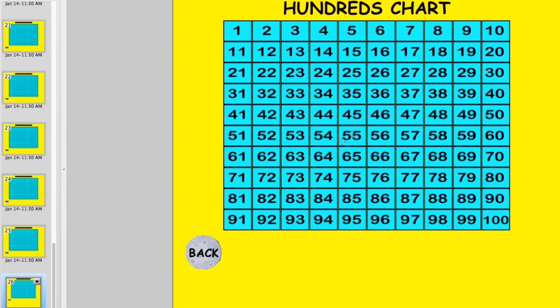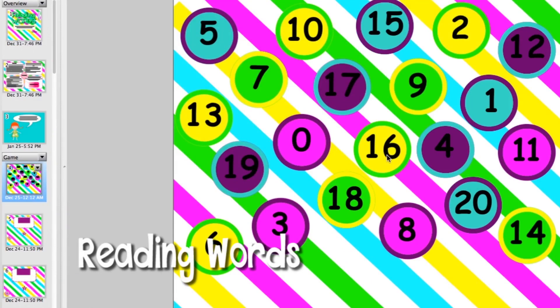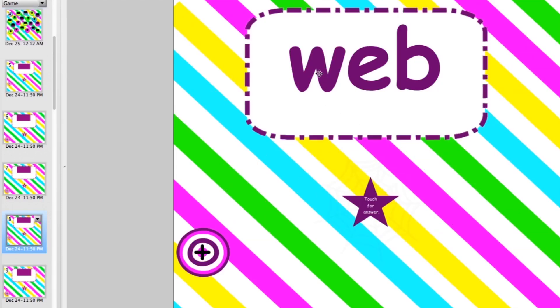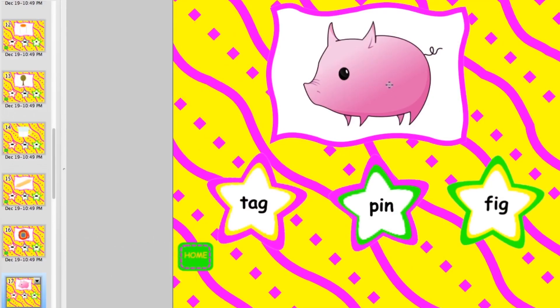In this reading words game, students will touch a number circle, a word will appear, they'll try to sound it out. Once they think they have it, they touch the star and the picture will appear that matches the word.